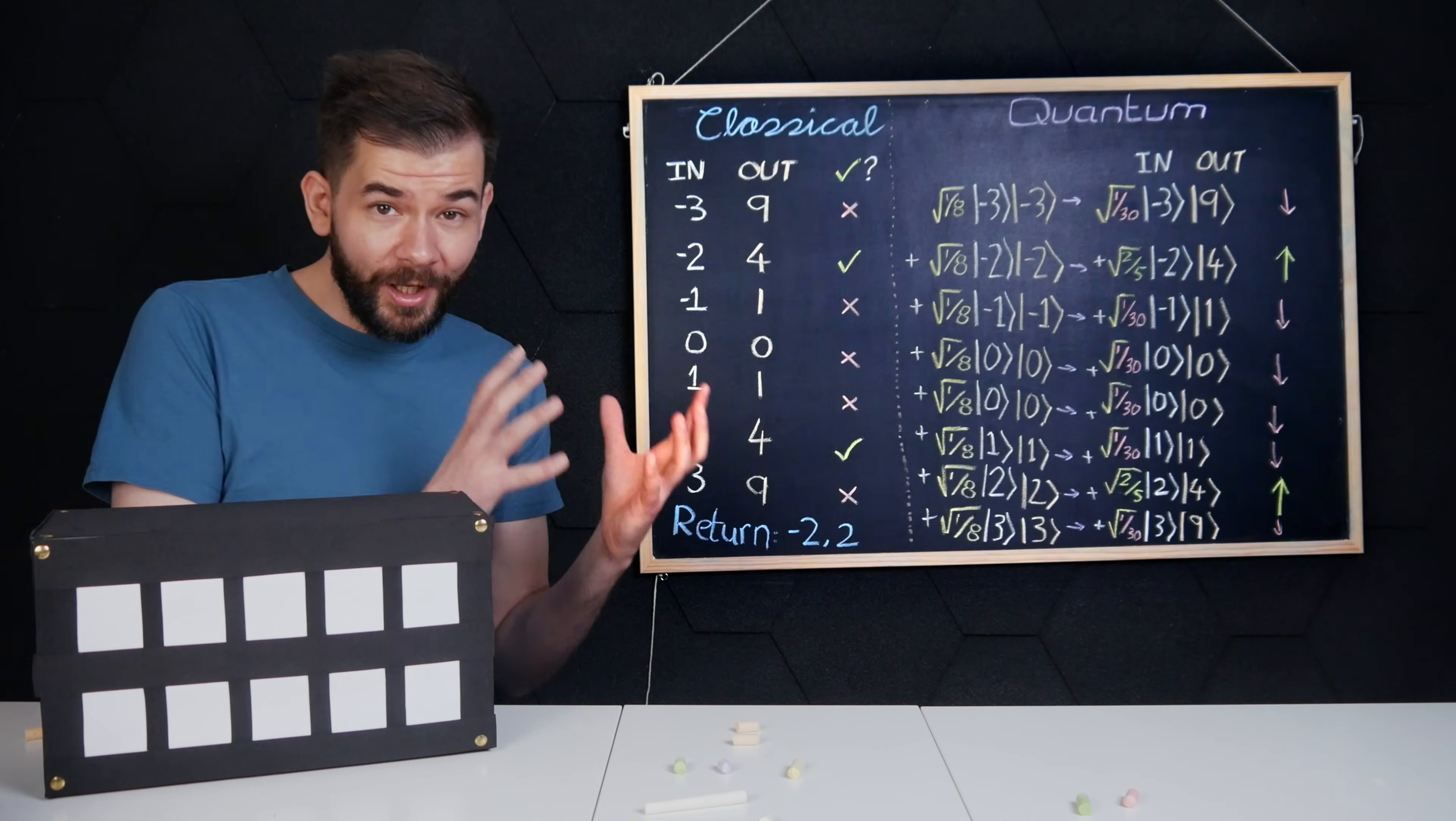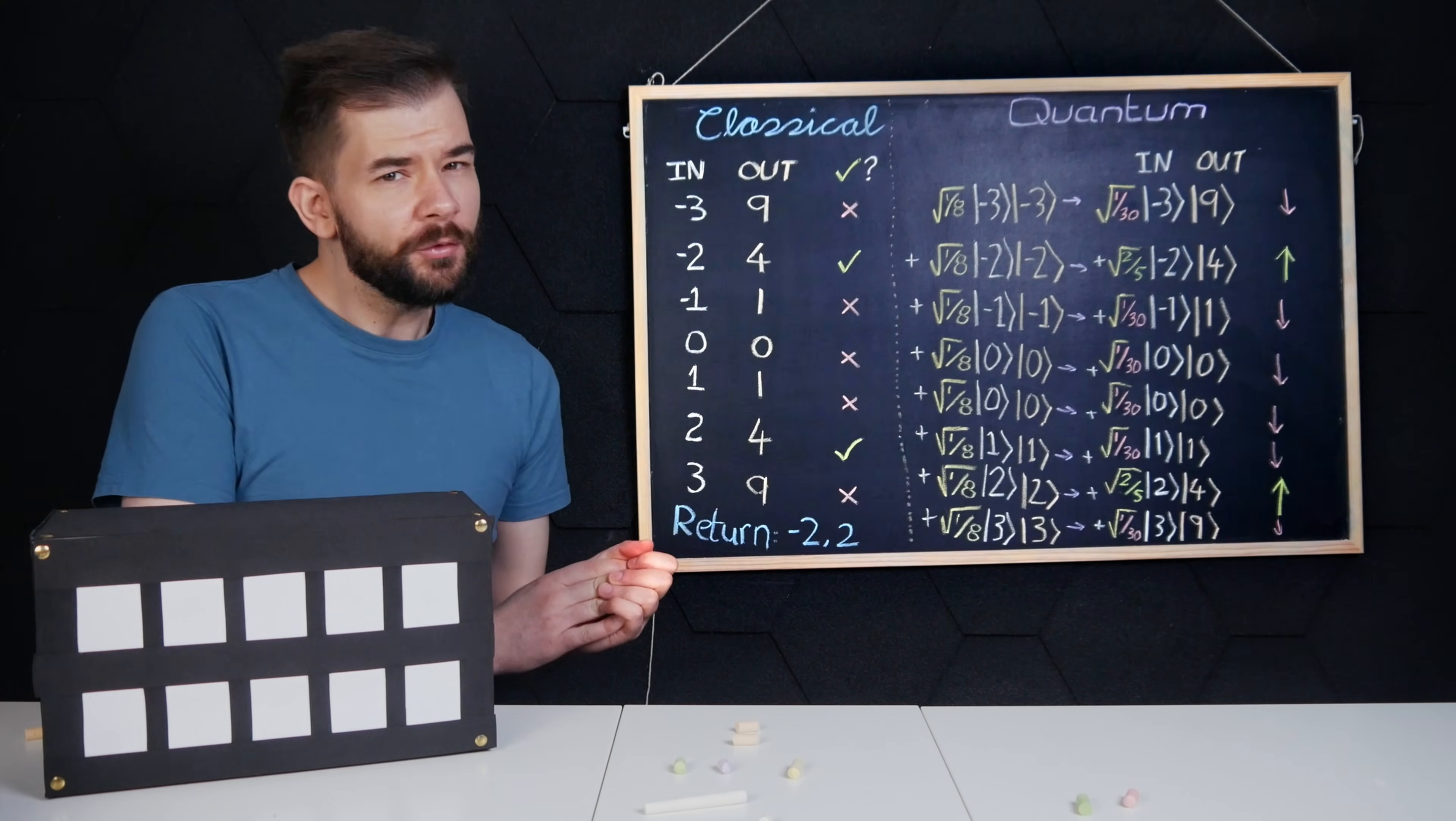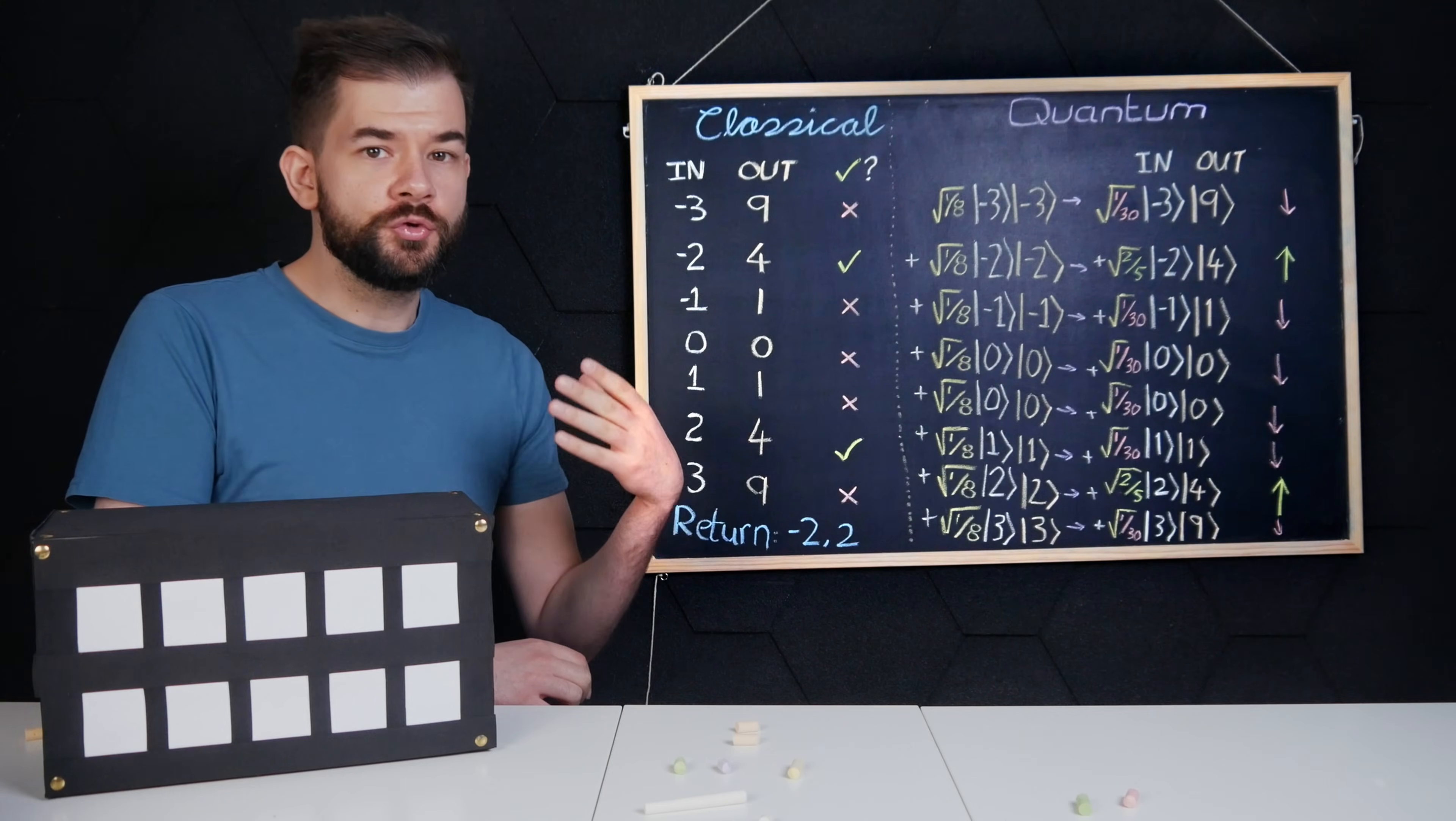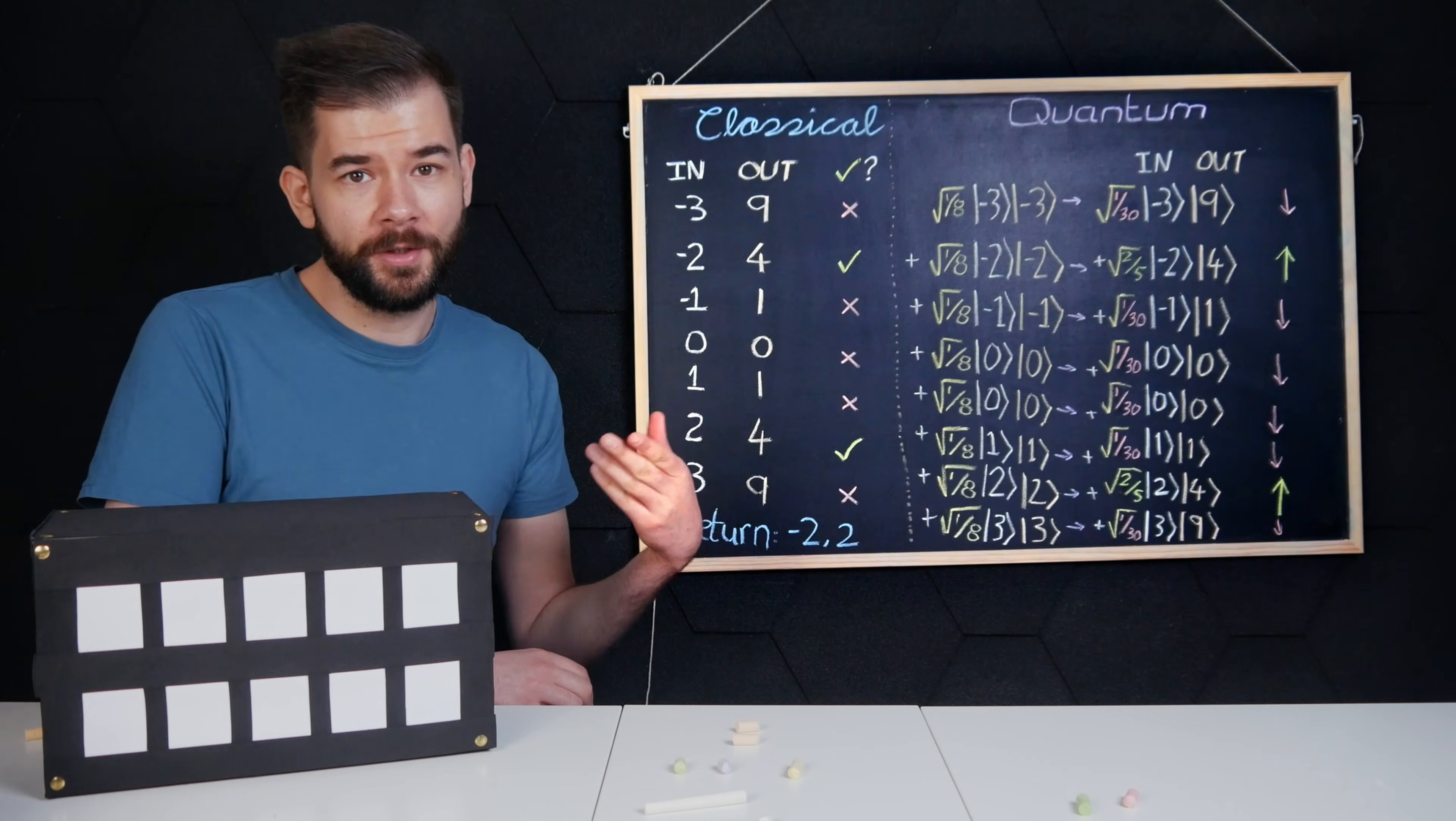Where the numbers used are so large that even that saving doesn't grant a practical advantage. It also has the downside of requiring us to know the correct answer in advance. Not great for password guessing applications.